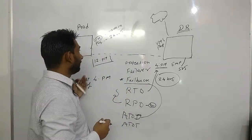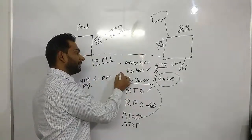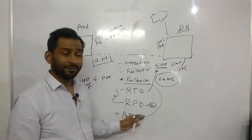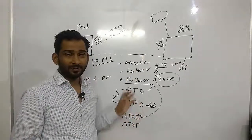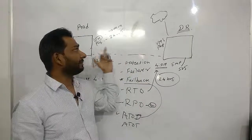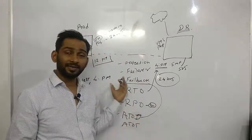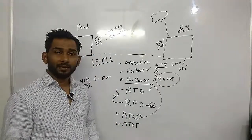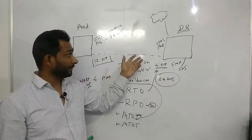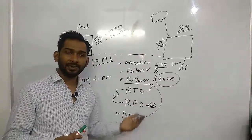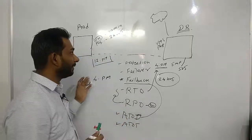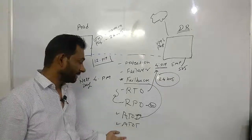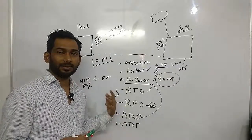So those are the key terms: protection, failover, failback, RTO, RPO, ATOT, and ATOD. At the time of test means performing a simulation of DR for compliance purposes or to verify that your DR will actually work at the time of a real disaster. You stop replication, isolate the environment, and bring up servers and VMs in an isolated network.